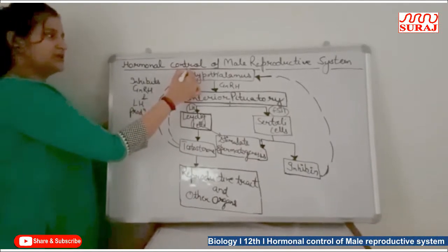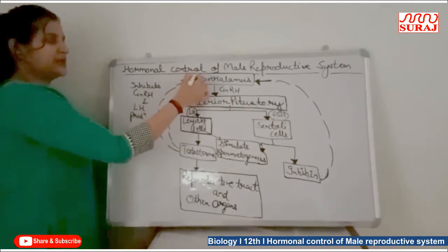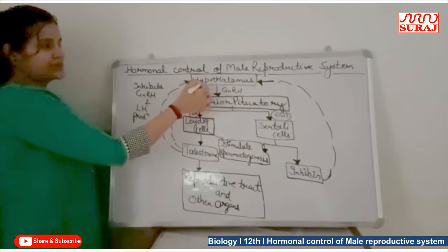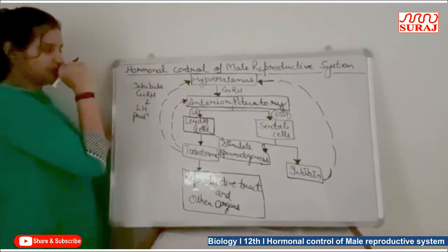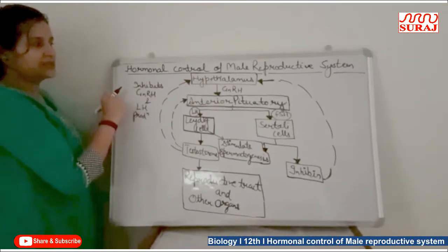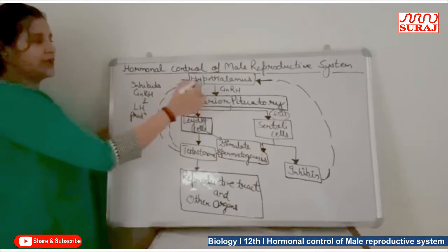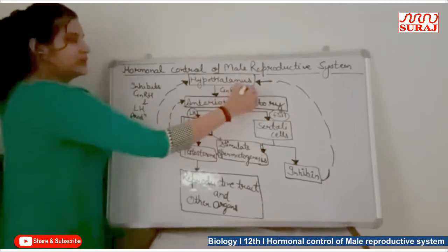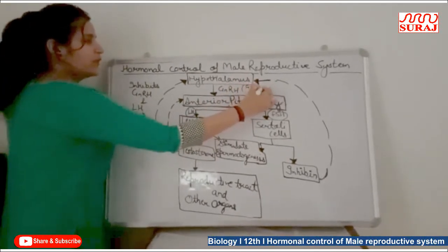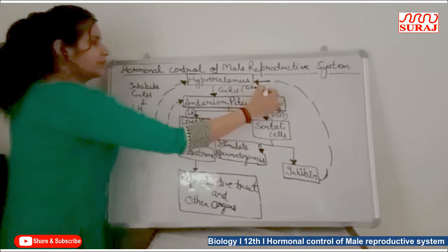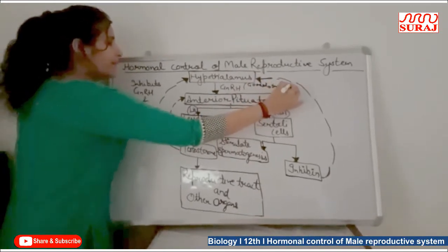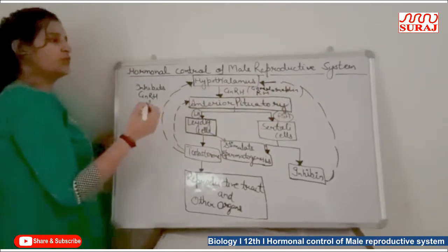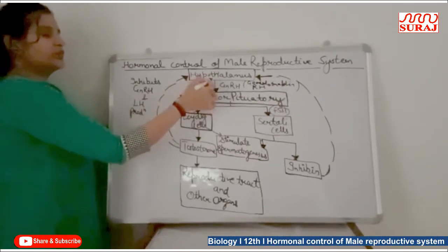We will discuss which hormones are involved. First, we talk about the gland present in our brain called the hypothalamus. This hypothalamus gland is located in our forebrain and is responsible for releasing a hormone called GnRH — gonadotropin releasing hormone.